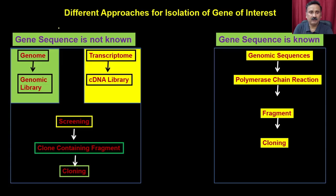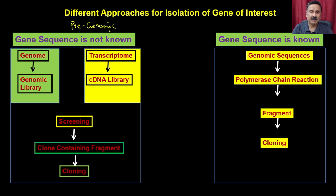In the previous lecture we discussed about the approach related to the condition when the gene sequence is not known — these are the pre-genomic era conditions, where people knew the property of the enzyme but were not sure about the gene sequence. In that case, either you have information about the genome of that organism, or you have the expression of that particular gene.